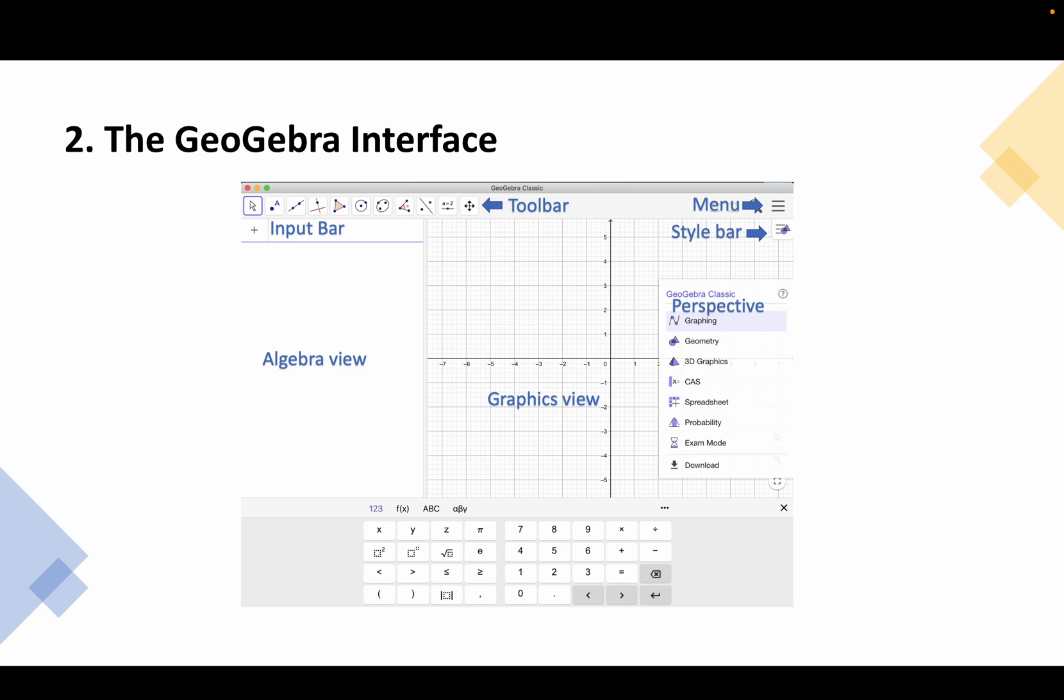This is the GeoGebra interface. We have the input bar here. You can type your equations here. This is the algebra view. This is where the algebraic properties of the objects will be displayed. For example, if you construct a line here the equation of the line will appear here.